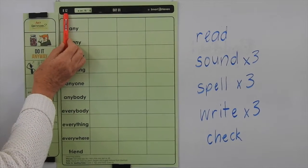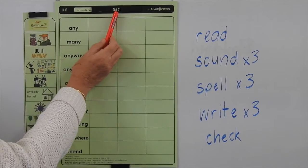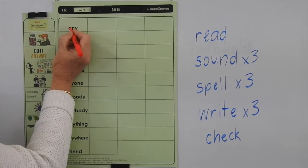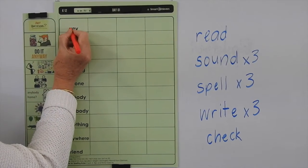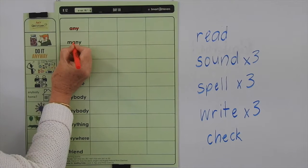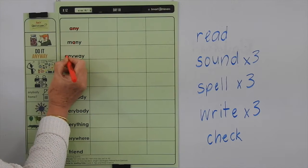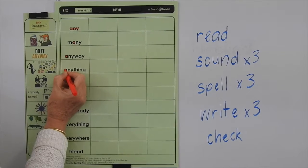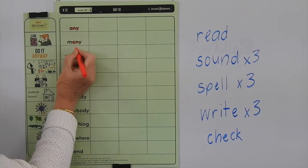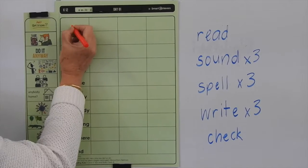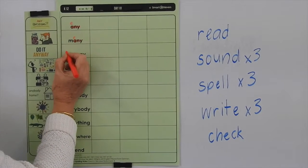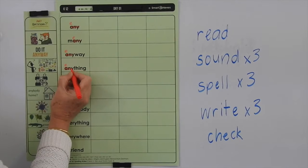This is level K, list 12, and we're doing day 1. Here we're looking at the A making the short-E sound as in 'any.' So let's look at 'many,' 'anyway,' 'anything.' I've got 'any' in all of these words, but we're really looking at the A making that short-E sound in these words.